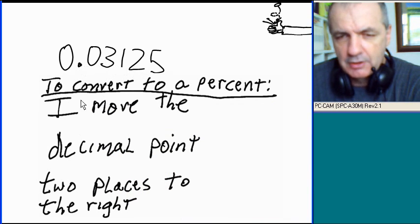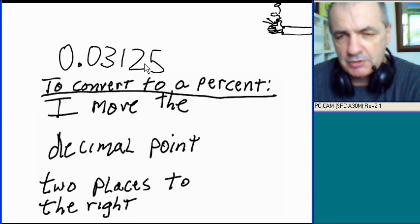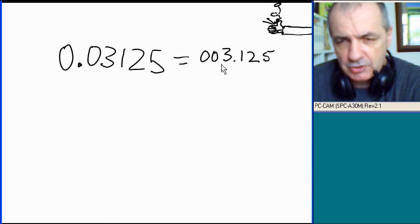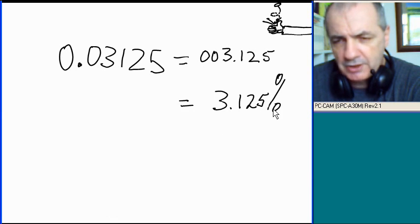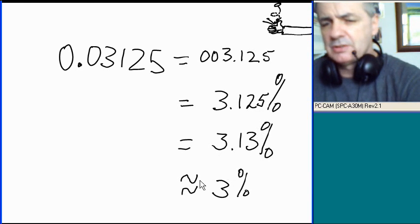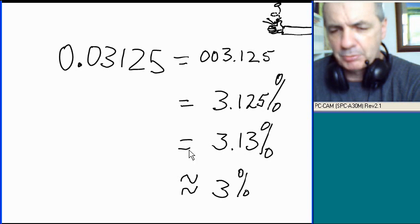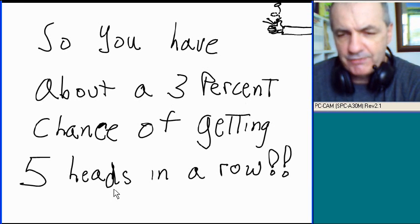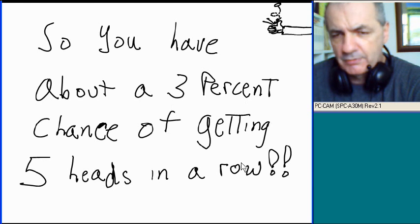0.03125. To convert to a percent, I move the decimal point two places to the right. That gives me 3.125%, which rounds to approximately 3%. So you have about a 3% chance of getting five heads in a row. That's not a lot.